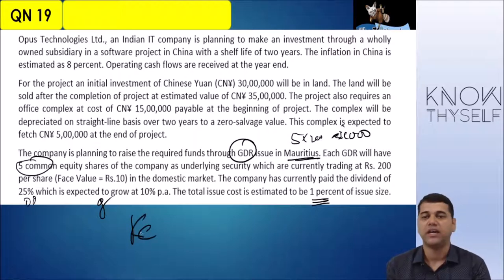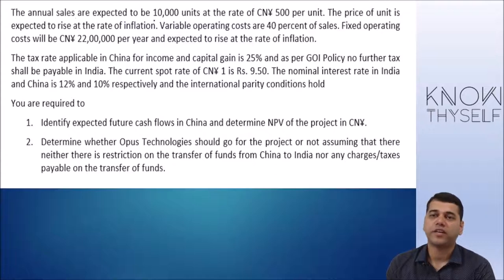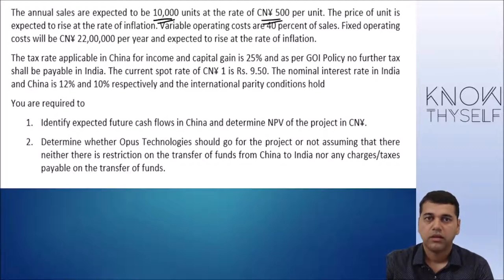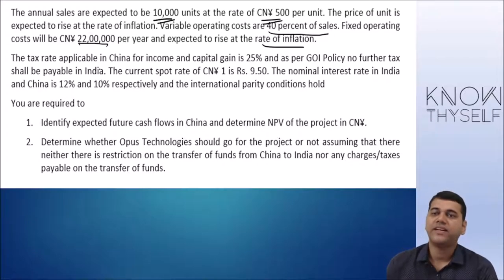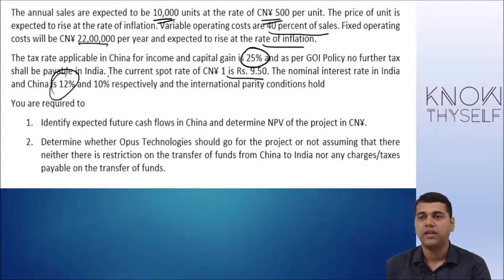In the domestic market, the company currently pays a dividend of 25%, which is expected to grow at 10% (D0 and G). Issue cost is estimated to be 1% of the issue size. Annual sales are expected to be 10,000 units at 500 Yuan per unit, with the price expected to rise at the rate of inflation, giving two different prices over two years. Variable operating costs are 40% of sales. Fixed operating cost is Chinese Yuan 22 lakhs per year, expected to rise at the rate of inflation. The tax rate applicable in China for both income and capital gain is 25%, with no further tax payable in India. The spot rate is given, with nominal interest rate of 12% in India and 10% in China, and international parity conditions hold.